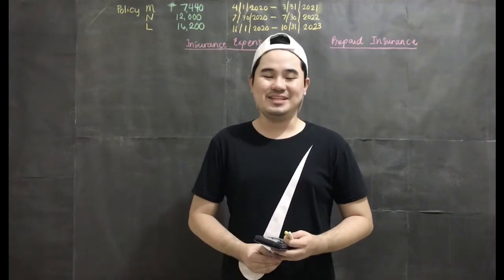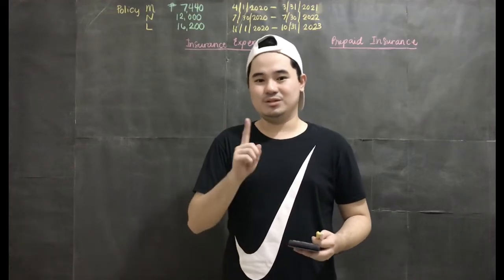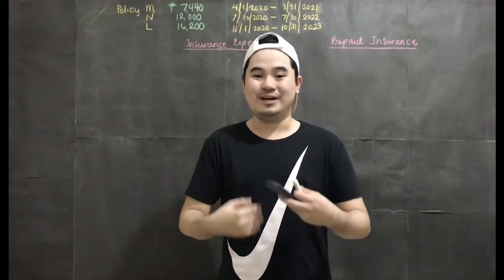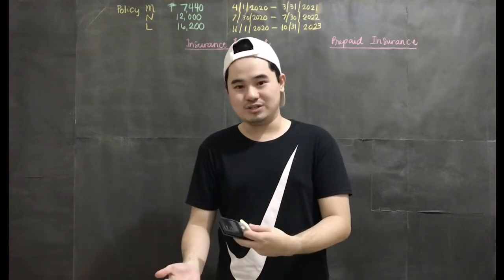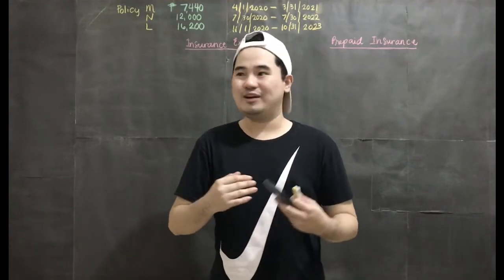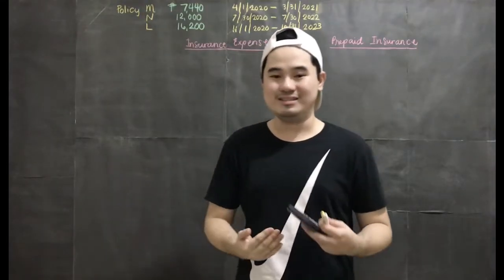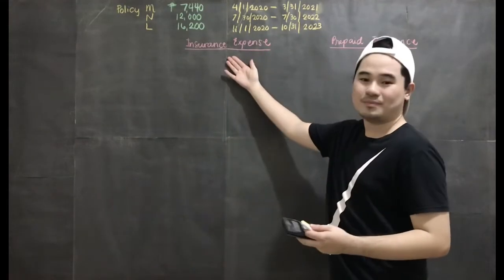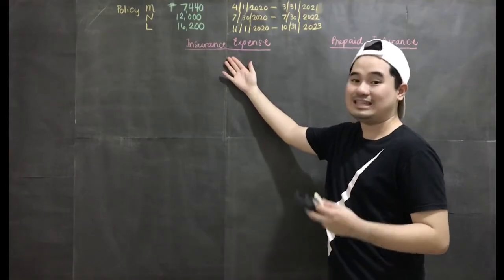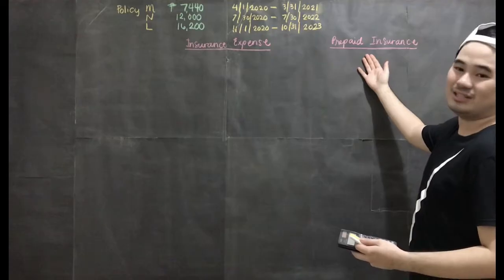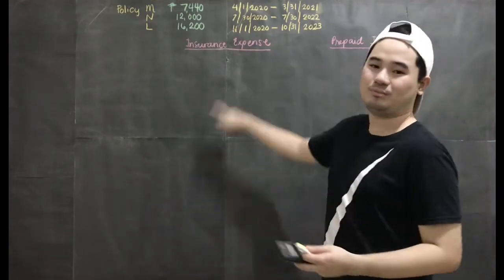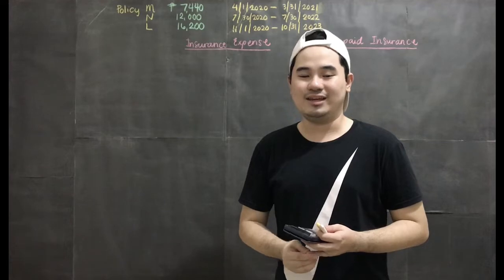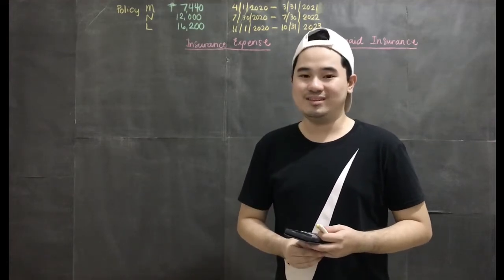Hello everybody, welcome to lesson 18. Today we will be discussing prepaid insurance and insurance expense — prepayments on insurance. In the last video, we discussed adjusting entries and adjusting entries for prepaid expenses. Now we will have a more complex example involving insurance policies that are being paid in advance, and how to get the insurance expense for each period affected and the prepaid insurance to be reported in the financial statements. Please download the handout — the link is in the description box.